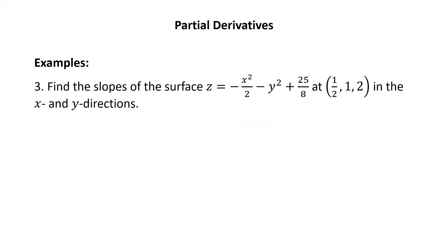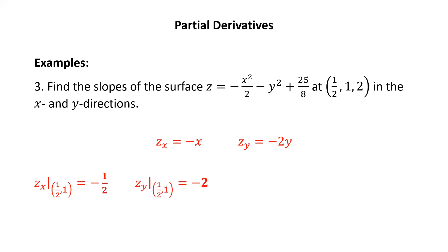Find the slopes of the surface z equals negative x squared over two minus y squared plus twenty-five eighths at the point (one half, one, two) in the x and y directions. The partial of z with respect to x is negative x; the partial of z with respect to y is negative two y. So z sub x at (one half, one) is negative one half, and z sub y at (one half, one) is negative two.